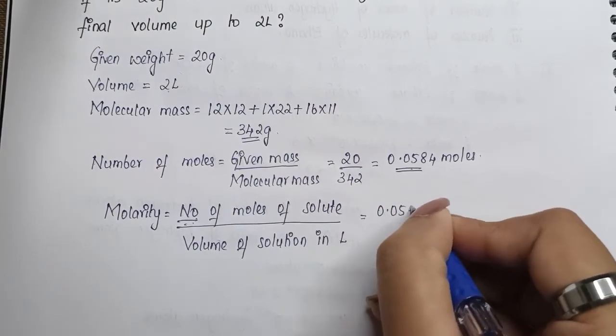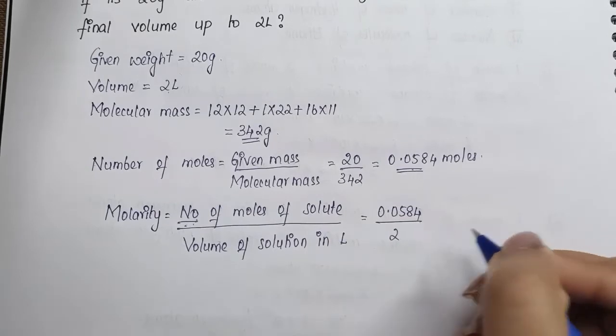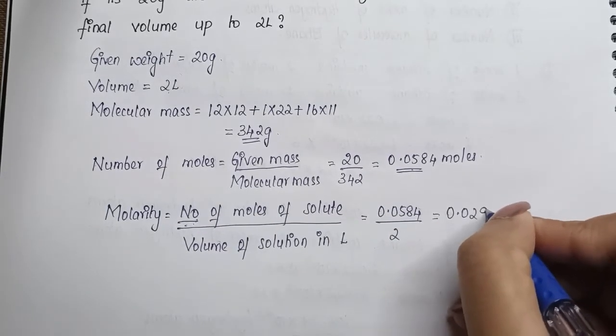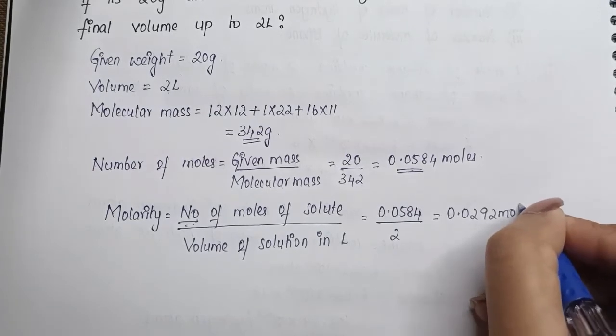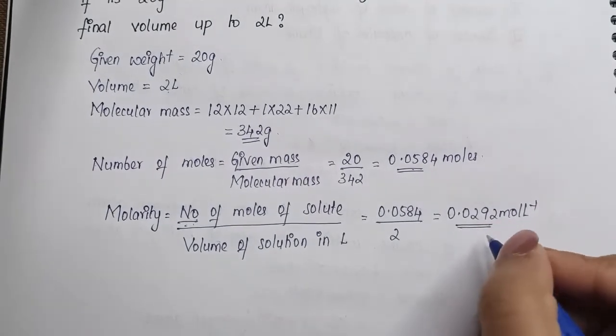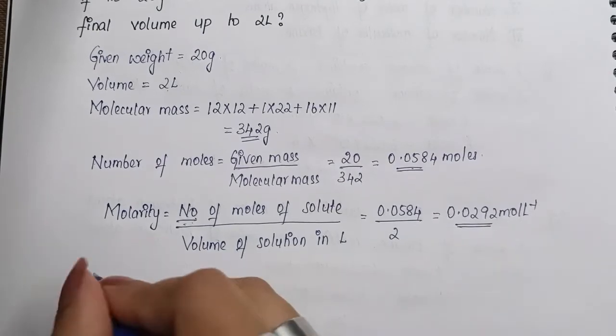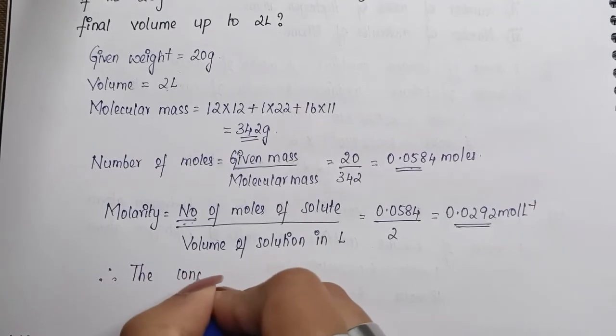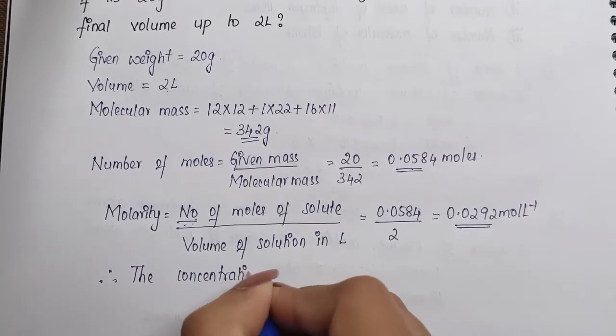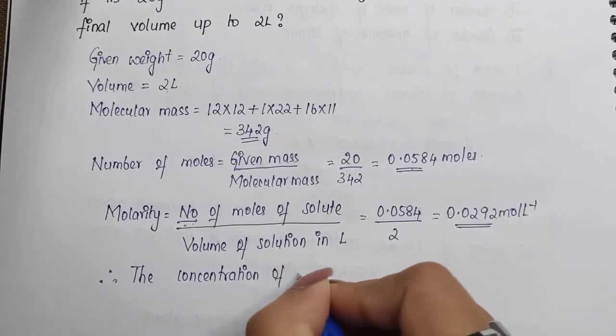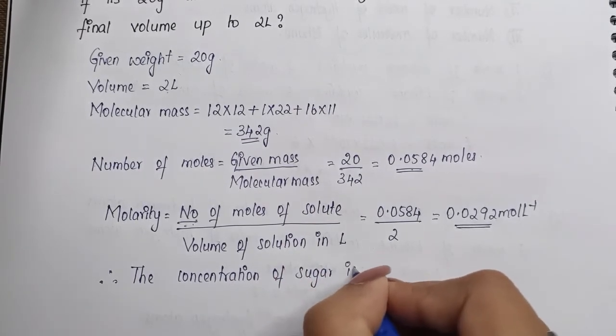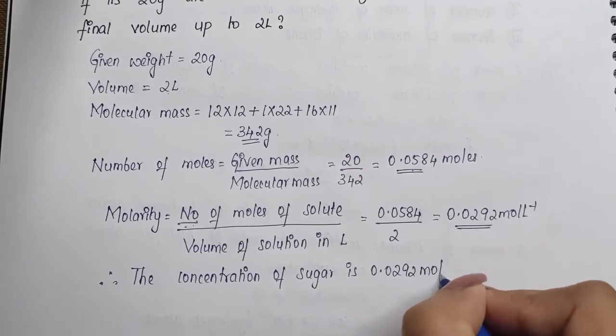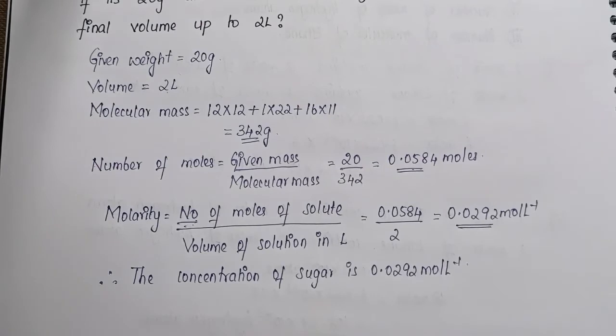So 0.0584 divided by 2, molarity is going to be 0.0292 mol per liter. That is going to be the concentration of sugar. So we can write: therefore, the concentration of sugar is 0.0292 mol per liter.